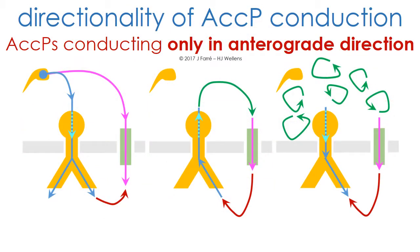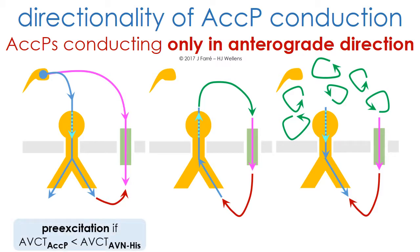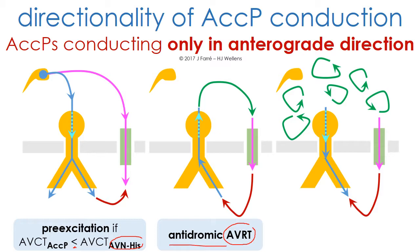Accessory pathways conducting only in the anterograde direction can exhibit ventricular pre-excitation during sinus rhythm if the atrioventricular conduction times via the accessory pathway are shorter than the atrioventricular conduction times over the normal AV node, His pathway. These patients may also develop a form of atrioventricular reciprocating tachycardia that is called antidromic, because atrioventricular conduction during this tachycardia is via the accessory pathway, while the normal AV node, His pathway is used for retrograde conduction.